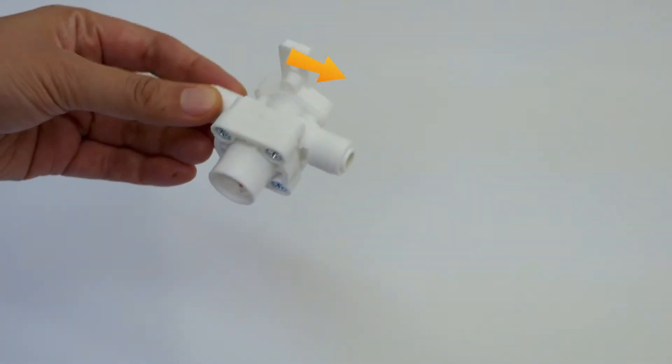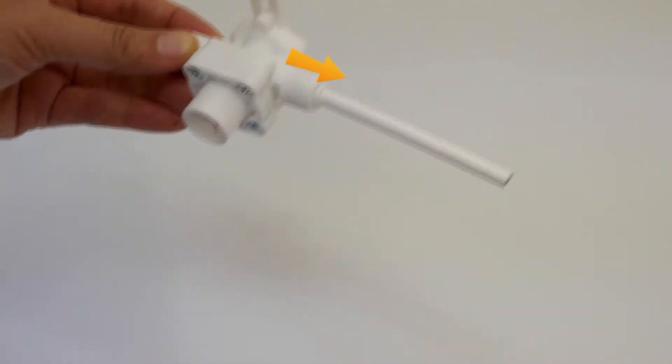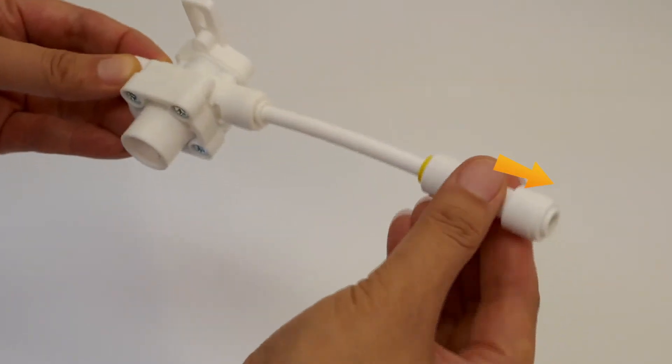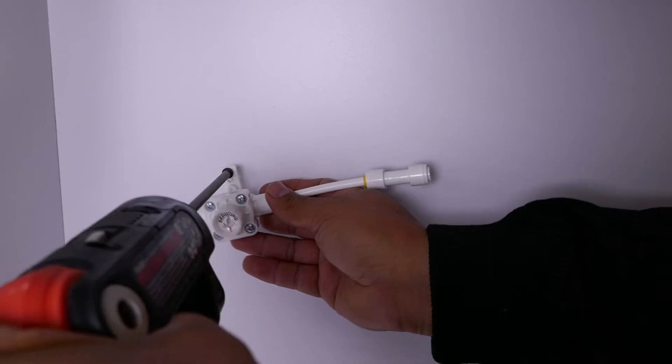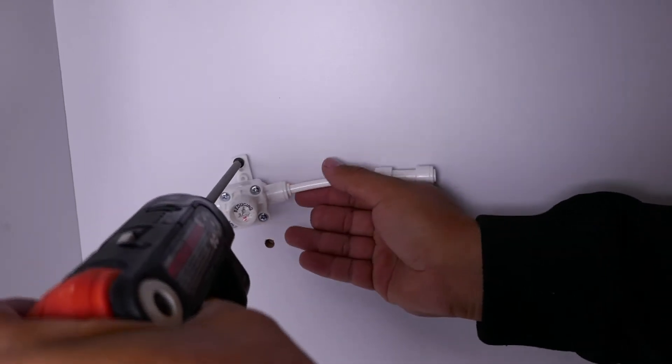Connect the regulator and dust filter carefully. Make sure the arrows point the same way as the water flow. Fix the regulator neatly to the sink wall by screwing it on.